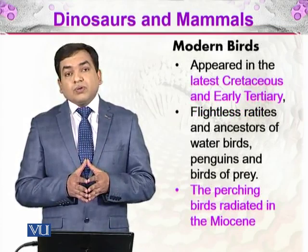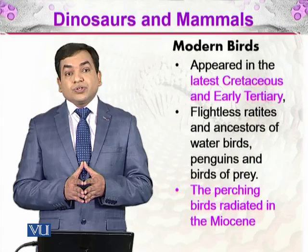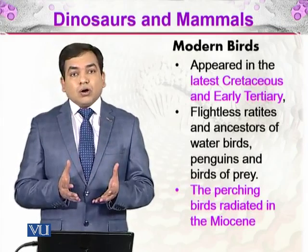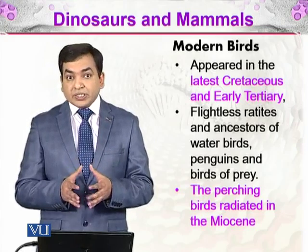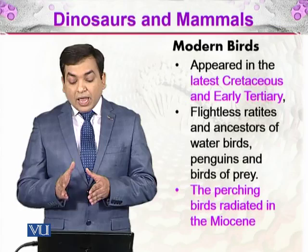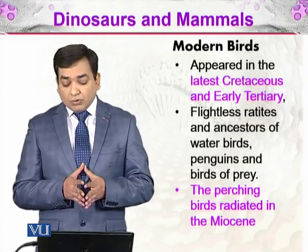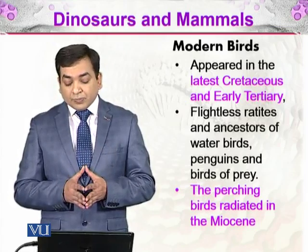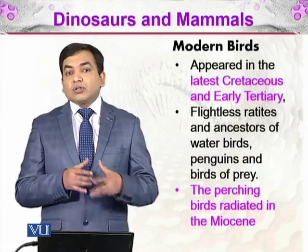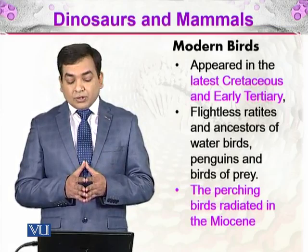What about modern birds? They appeared in the latest Cretaceous and early Tertiary and they were flightless ratites. Ratites are birds that are flightless, have long legs, and are large. They are ancestors of water birds such as waterfowl, penguins, and birds of prey. The perching birds — those living in trees — radiated during the Miocene.